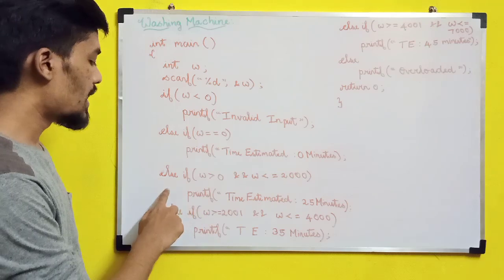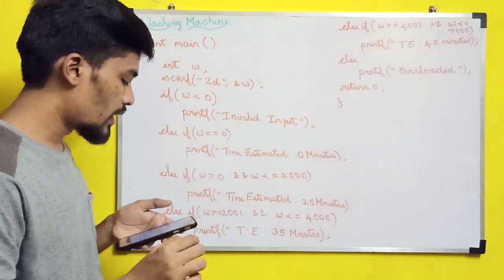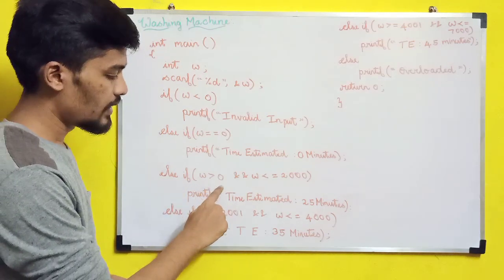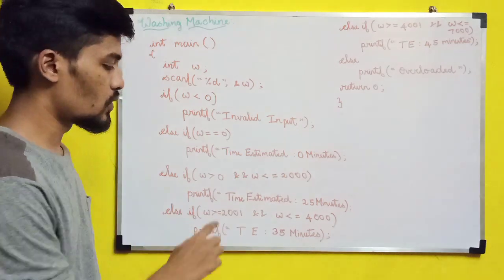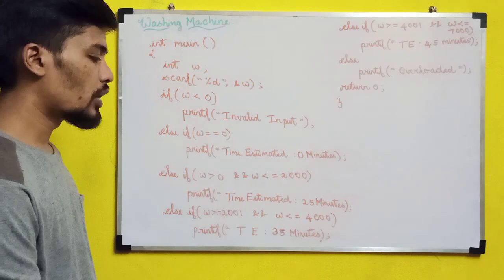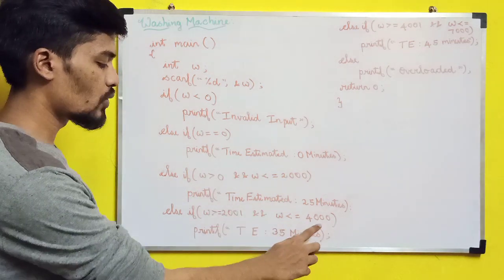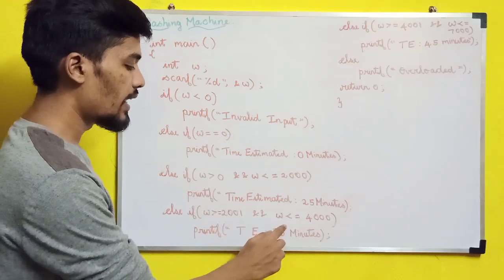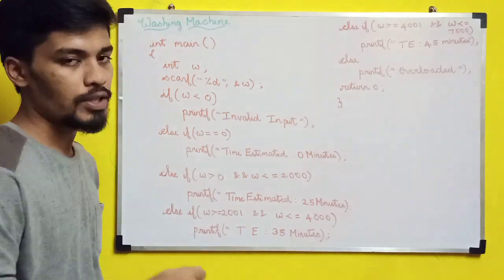And else if for the low water level condition: weight is greater than 0 and weight is less than or equal to 2000 grams, so the time estimated is 25 minutes. Next, for medium water level, the condition is w greater than 2001 and w less than or equal to 4000, so the estimated time is 35 minutes.